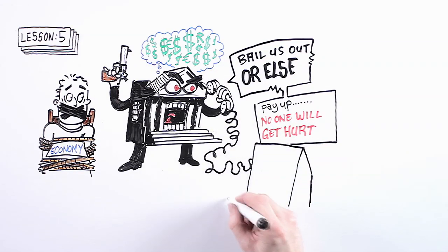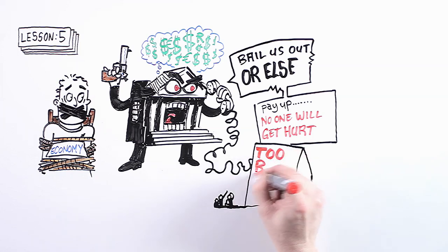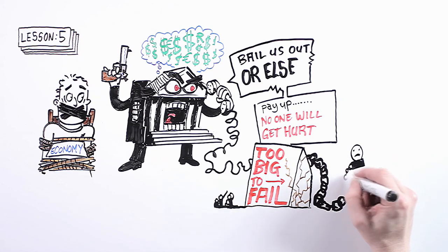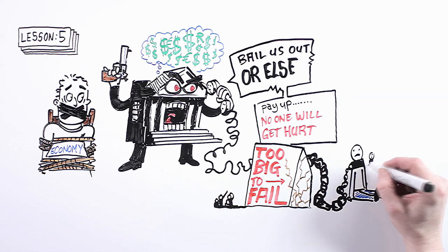So the banker picks up the phone to the politician and says, if you don't give us what we want, we will kill the economy, and you don't want that to happen, do you? So come on now, pay up, and nobody's going to get hurt.